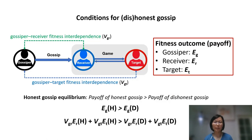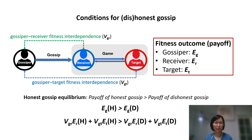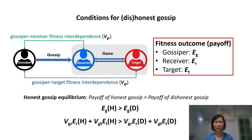Here, sharing honest or dishonest gossip will influence the receiver's behavior towards the target in the game, which leads to different payoffs for the receiver and the target. Meanwhile, the gossiper may have some net gains or losses depending on their positive or negative interdependence with the other two parties. When the expected payoff of honest gossip is larger than that of dishonest gossip, people will gossip honestly; otherwise, they gossip dishonestly.